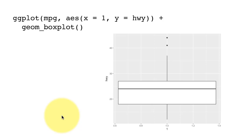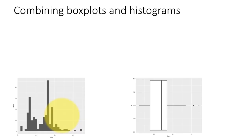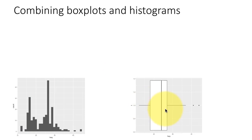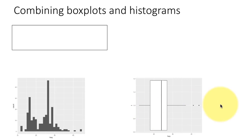Let's now take a look at combining histograms and box plots to look at variation. We already know that histograms are definitely one way to visualize variation in a quantitative or continuous variable, and box plots of course are also good for that purpose. Now what we'd like to do is to put together both of these things.